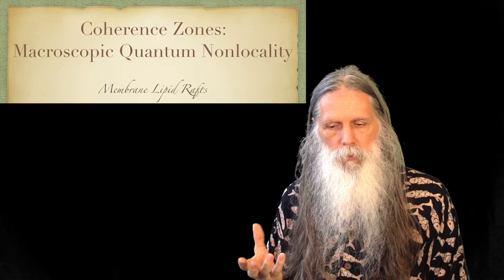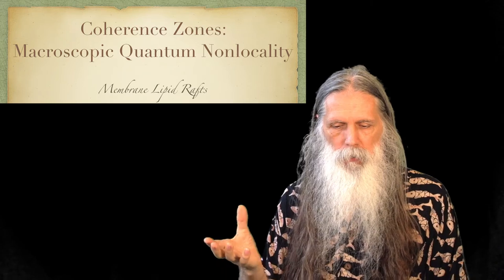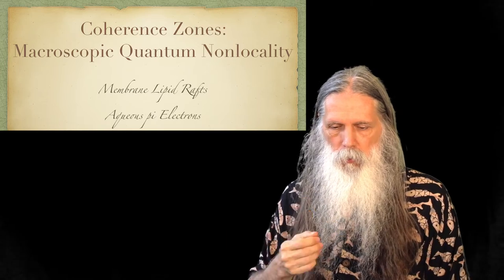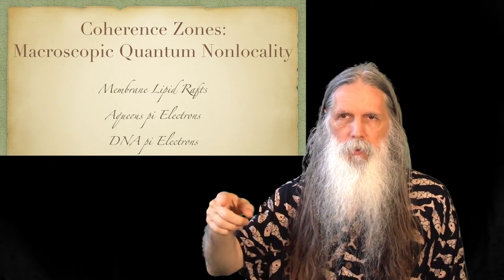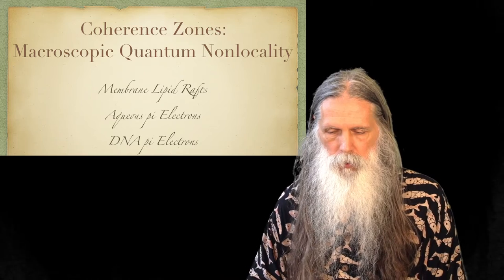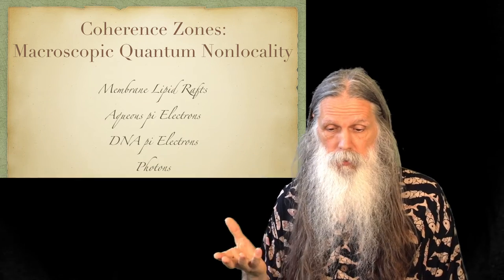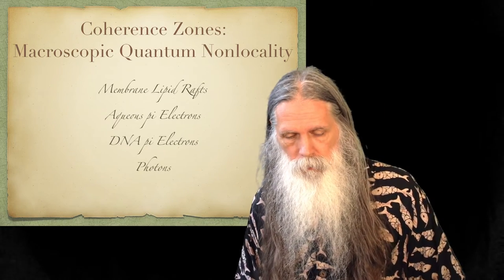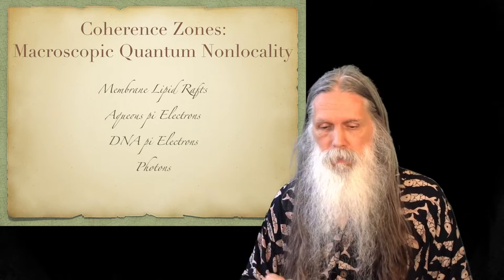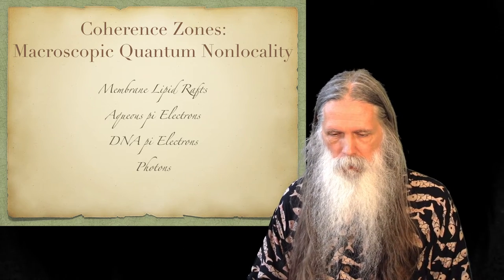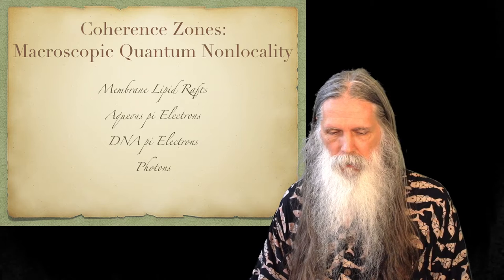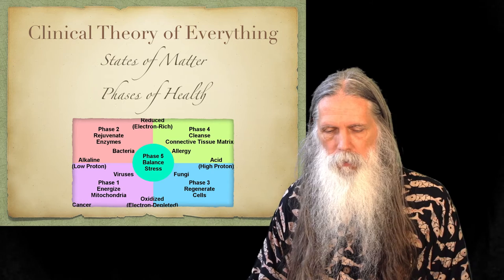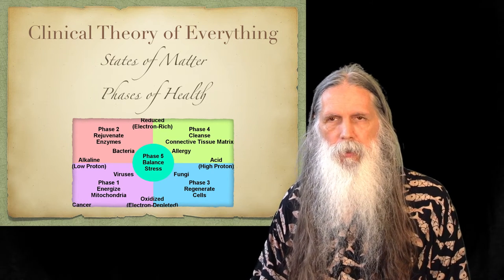We have coherence zones in the cell membrane — lipid rafts — and the aqueous pi electrons in sheets. We have the DNA pi electrons in the double helix of the sugar residues of DNA. We have photons shown to form into coherent zones with mass. Now let's talk about the phases of health, which is a central part of the Clinical Theory of Everything.